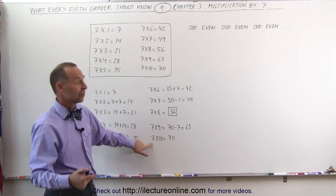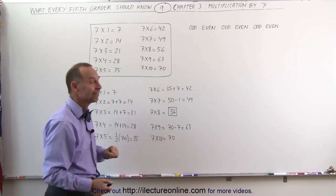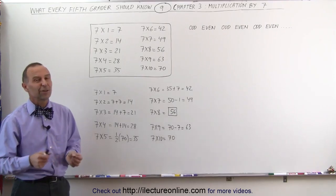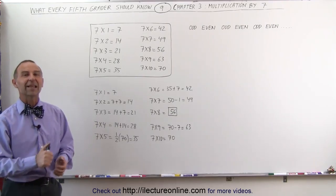And finally, of course, 7 times 10, you simply add a 0, and you get 70. So here are some nice tricks to help you multiply times 7 to make the job a little bit easier. And that's how it's done.